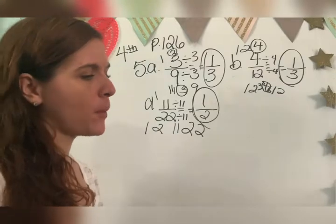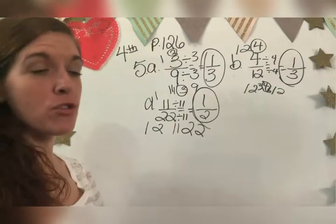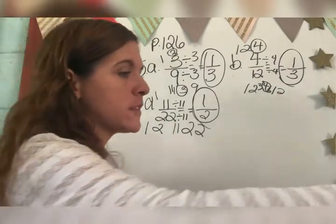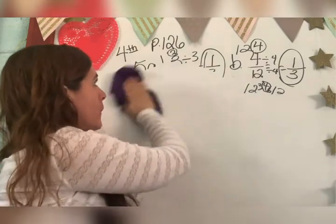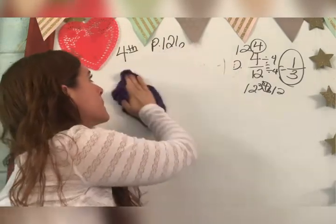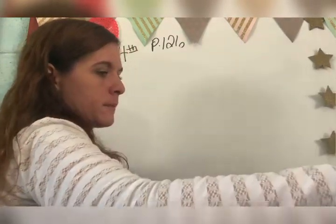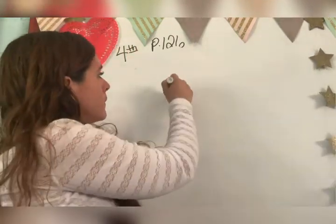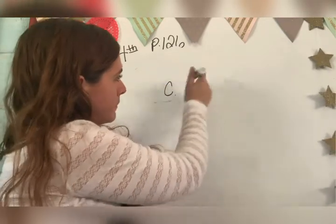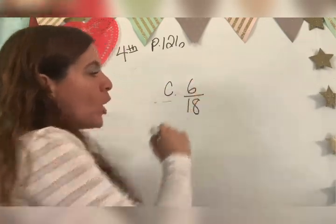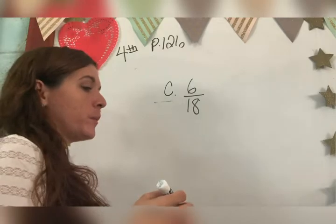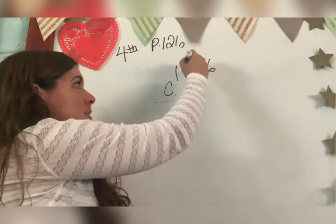Go ahead and try letter C. I just did letter B. Try letter C by yourself and let's make sure that you understand. Okay. What are my factors of six, Tiano? One, six, two, three.